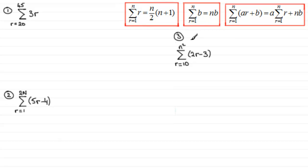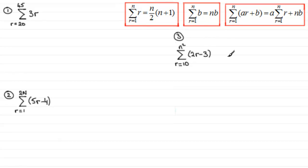Assuming that you're familiar with those, I've got three more examples where we extend these ideas. In the first example, we've got the sum Sigma of r going from 20 to 45 of 3r — notice it doesn't start from 1. In example two, we sum 5r minus 4 with r going from 1 to 2n. In the third example it's a combination: the sum of 2r minus 3 with r going from 10 to n squared. If you feel you can have a go, pause the video — I strongly encourage you to try them.